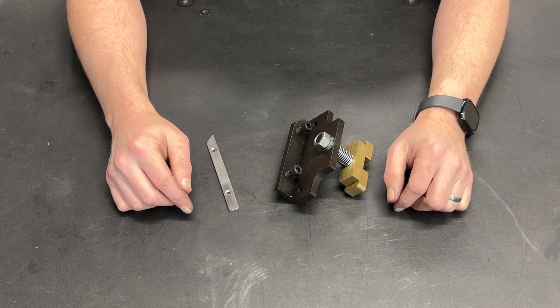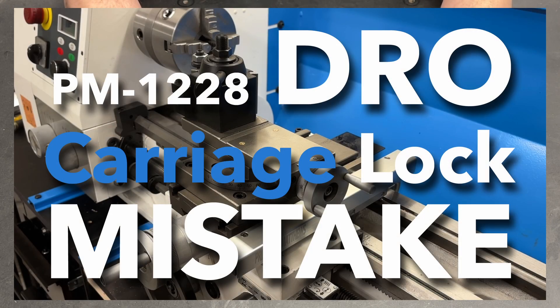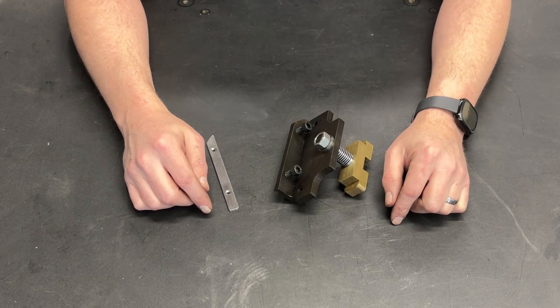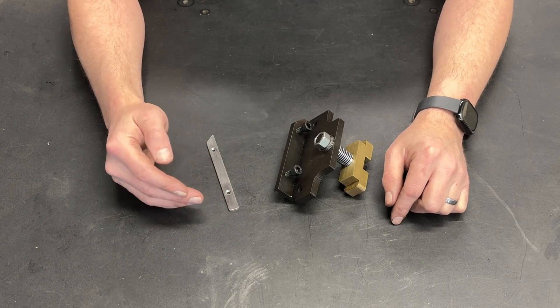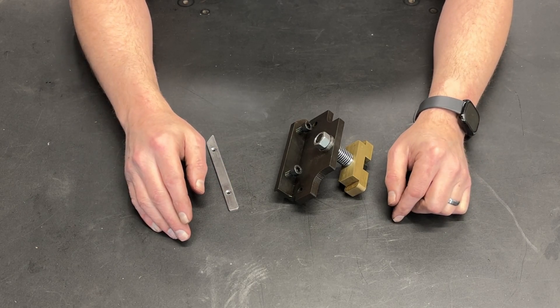Greetings fellow DIYer and welcome to my video. Several months back I uploaded a video about the carriage lock on my PM1228. As I began to use the machine I was horrified to discover that the factory installed DRO covered both carriage locks.